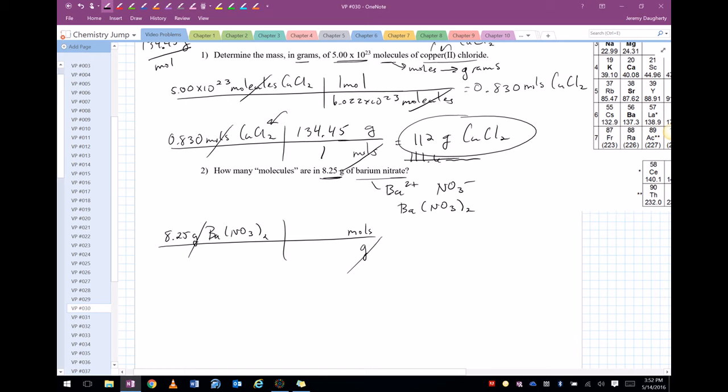Grams cancel out. Any time I have moles over grams or grams over moles, I'm talking about molar mass of whatever is in front of it. So in this case, it's going to be the molar mass of barium nitrate. So let's calculate that down here.